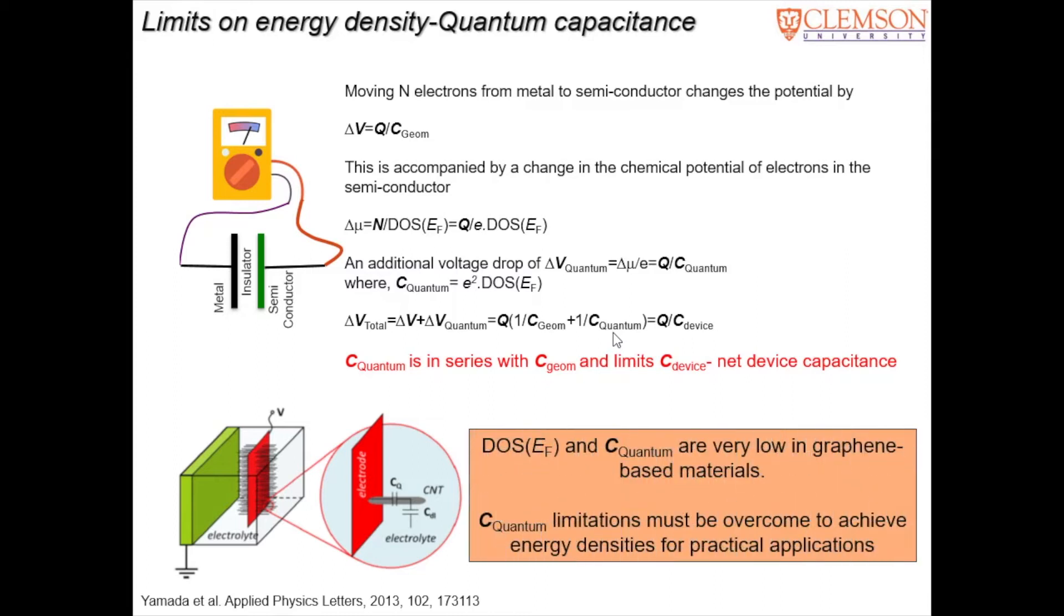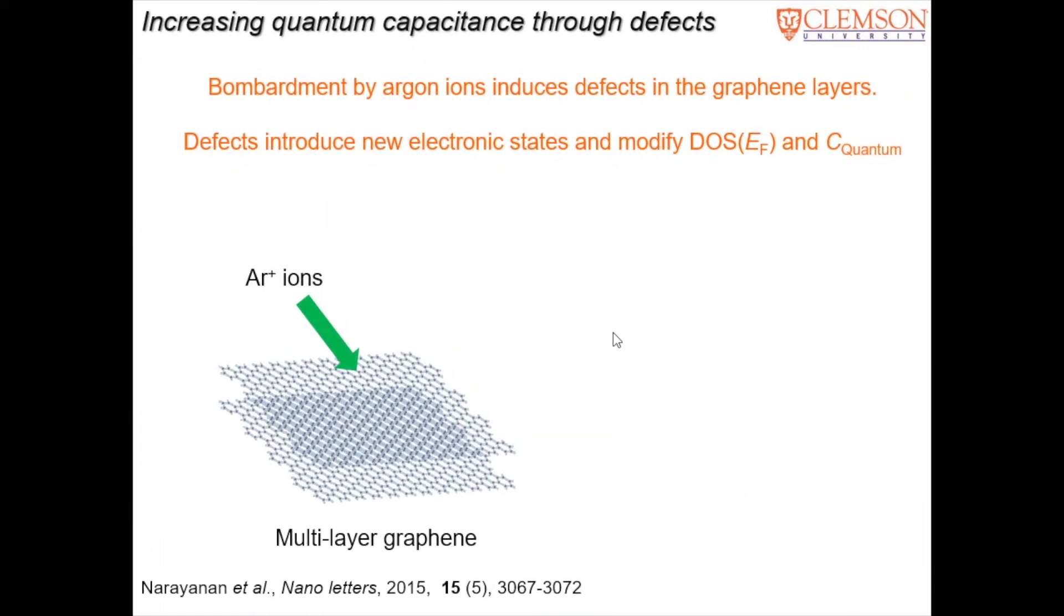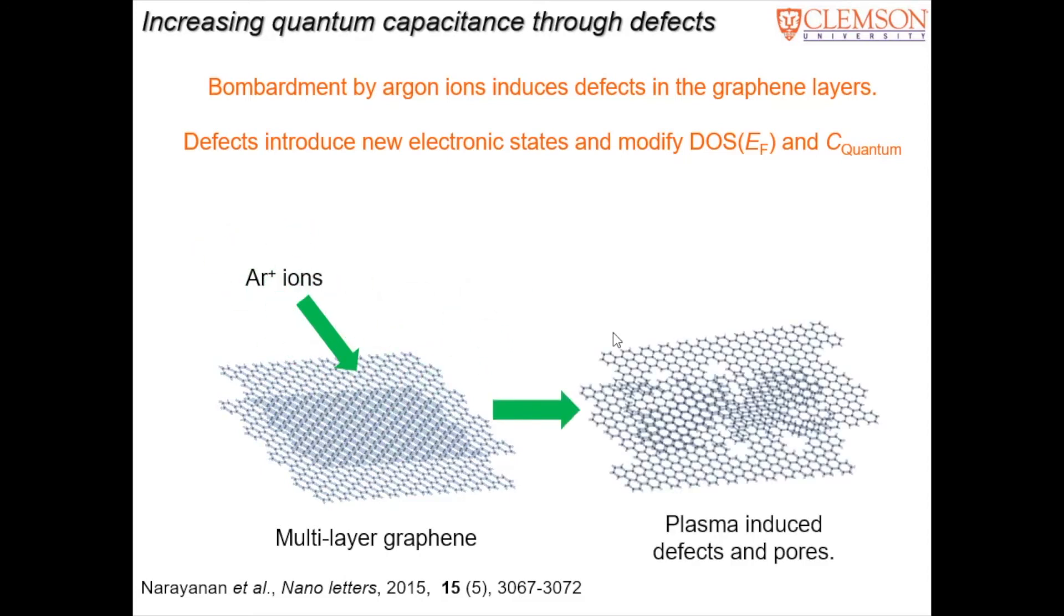And the way to increase this quantum capacitance is to simply add more number of seats in each row. So if you add more number of seats in each row, then the ticket price wouldn't go up so fast. And to do that, what we did was we took these graphene sheets, which are one atom thick layer of carbon atoms, and then we bombarded it with argon ions. So once you bombard it with argon ions, you end up creating these pores, these defects. And these defects add new electronic states, they introduce new seats in each row.